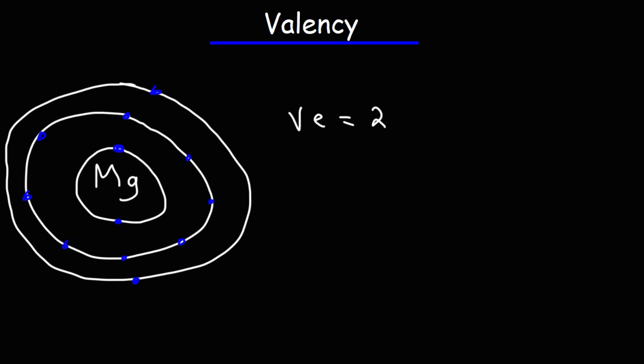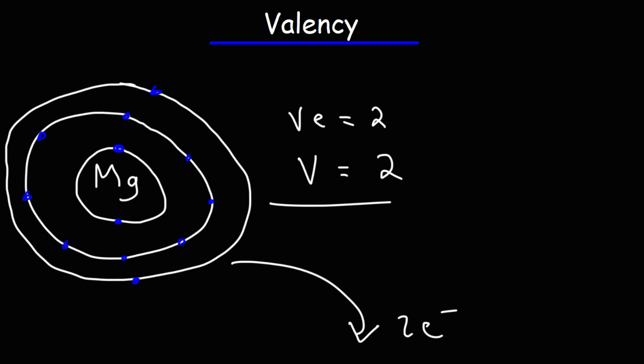Magnesium is a metal. Metals like to lose electrons — they like to give away electrons. Non-metals prefer to acquire electrons. So magnesium has the potential to give away two electrons, so its valency is two. When magnesium gives away those two electrons, it's going to become the Mg2+ ion, which is a cation.